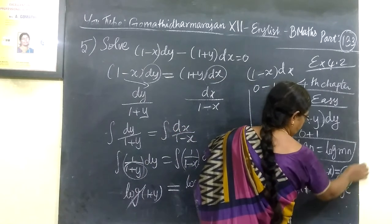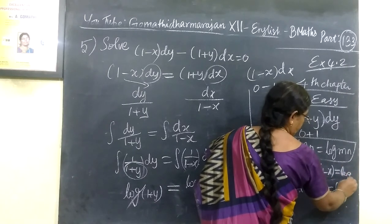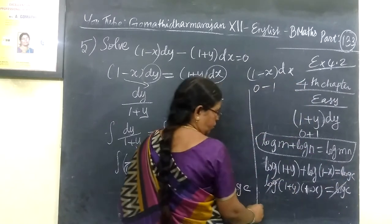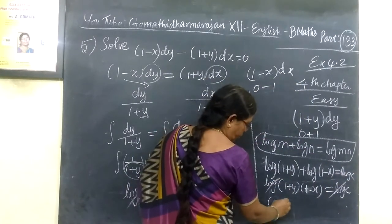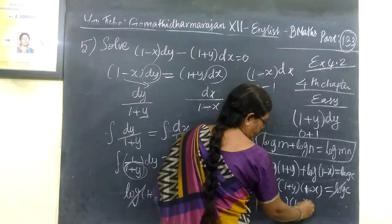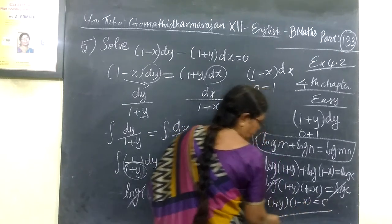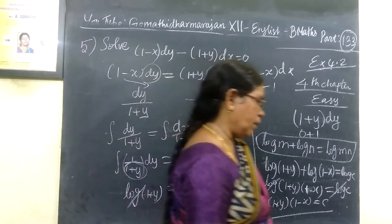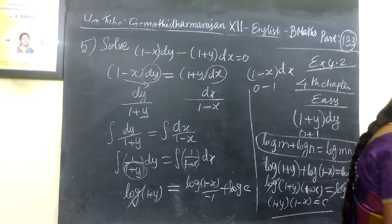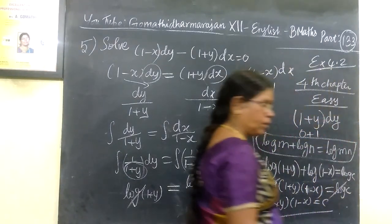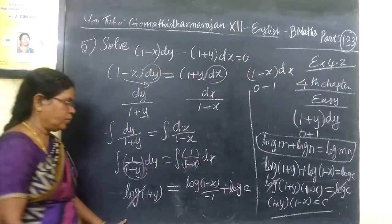If we cancel log on both sides, (1+y)/(1-x) equal to c. So this is the answer. 1+y divided by 1-x equal to c. So this is the answer.